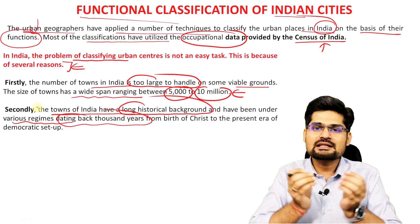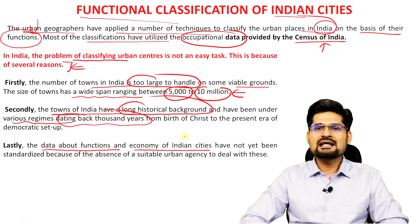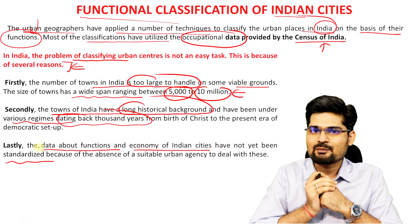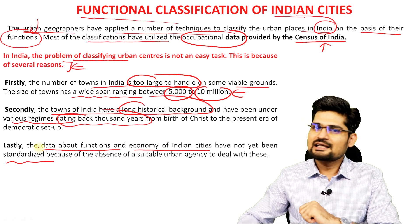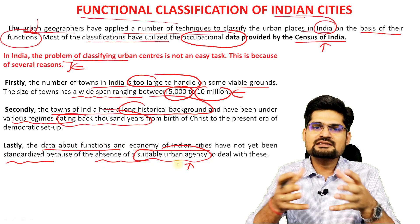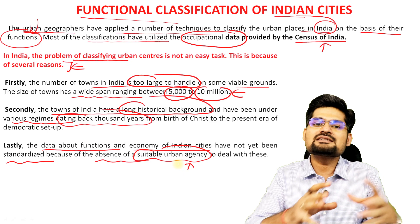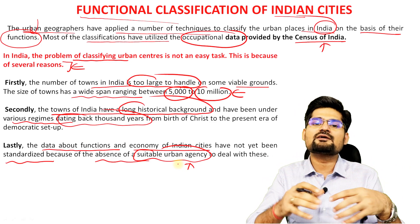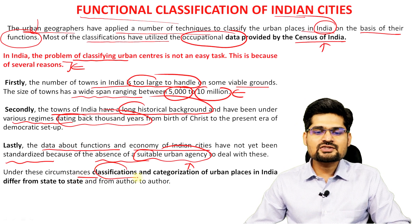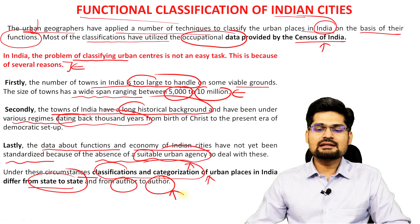The towns don't have a common inception, which is another problem. Third, data about the functions and economy of Indian cities have not yet been standardized — there is no standard list, chart, or set of variables. Because of this, every author has a different standpoint. The absence of a suitable urban agency to deal with this standardization is still missing, and there is no single national data center providing classification data on Indian cities. So different scholars have given their own viewpoints using various empirical and statistical methods.